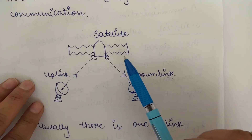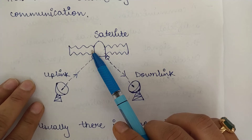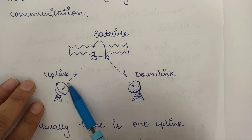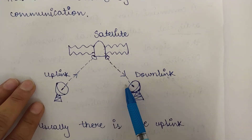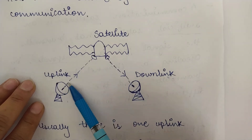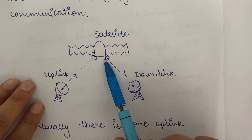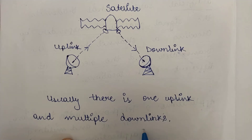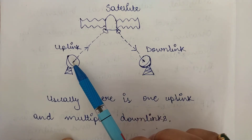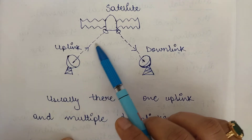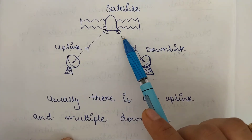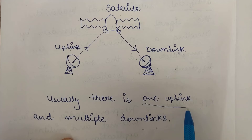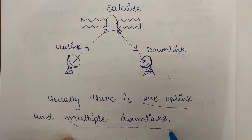In a general satellite communication setup, there is a satellite in orbit and substations on Earth with uplink and downlink frequencies. The uplink is the data going from the Earth station up to the satellite, and the downlink is the data coming from the satellite back to Earth. Usually there is one uplink — one station sending data to the satellite — but there can be multiple downlinks, meaning data from the satellite can be received by various stations on Earth.